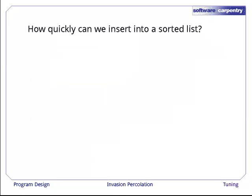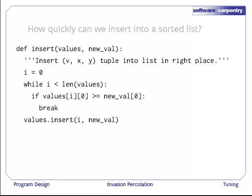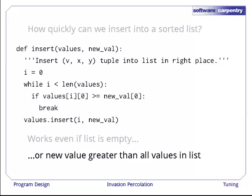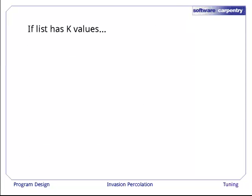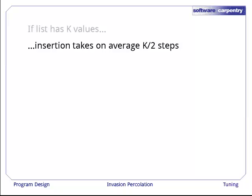Well, how quickly can we insert a value into a sorted list? Here's a simple algorithm. We set i equal to zero, and then look upwards through the list. As soon as we see a value in the list that is greater than or equal to the value we've got, we break out of the loop and insert our cell there. And if you check the documentation for the list.insert method, you'll see that this function does the right thing even when the list is empty or when the new value is greater than all of the existing values in the list, i.e., when we're appending the new record to the end of the list. Well, if a list has k values, then on average, if we're inserting things in the middle, it'll take about k over two steps.